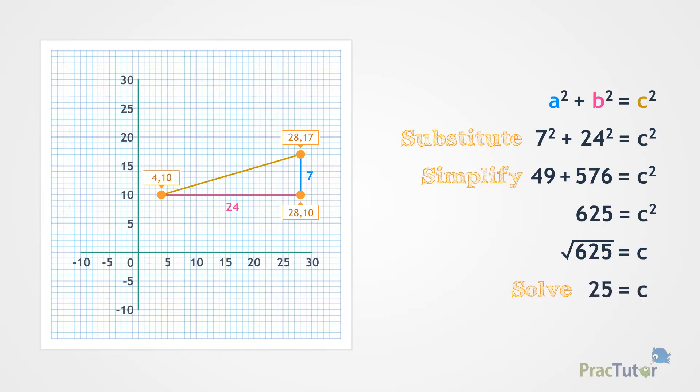This means c equals 25. The distance between 4, 10 and 28, 17 is 25 units.